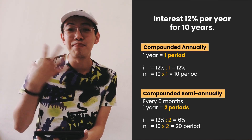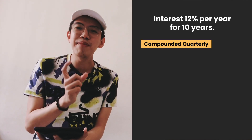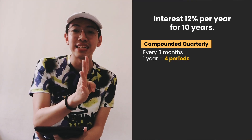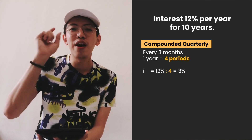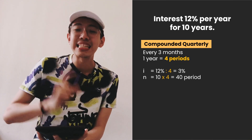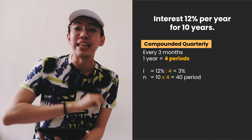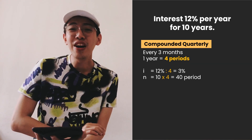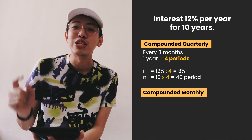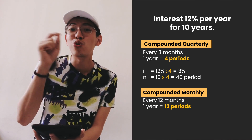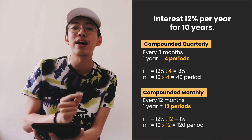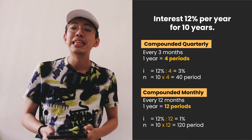If compounded quarterly (every three months), there are four periods per year: i = 12% ÷ 4 = 3% and n = 10 × 4 = 40 periods. If compounded monthly, there are 12 periods per year: i = 12% ÷ 12 = 1% and n = 10 × 12 = 120 periods.